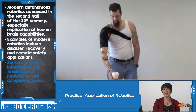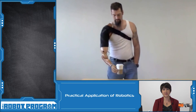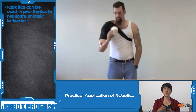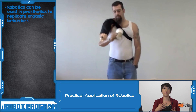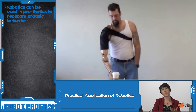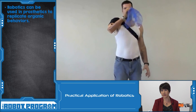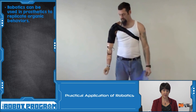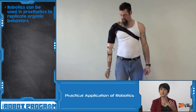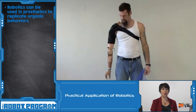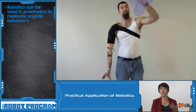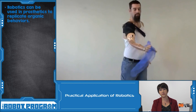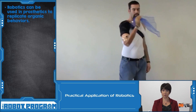Another field is the area of prosthetics. How can we use robotics to mimic or replace parts of the organic human body? We want them to behave in the same way — through arm joints, or touch, feel, and grasp. How can we replicate all of those things using robotics?